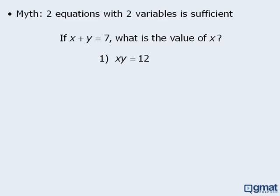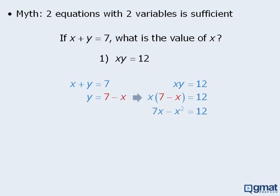Here is another example where the myth fails. In this question, we want to find the value of x. We are given one equation with two variables, and statement 1 provides a second equation with two variables. In this case the two equations are not identical, however when we combine them we still do not have enough information to solve for x and y. Taking x plus y equals 7 and solving for y gives y equals 7 minus x. Substituting into the second equation gives us an equation we can solve for x. Expanding the left-hand side and setting the quadratic equal to 0, then factoring, we can see that x equals 3 or 4. Since there are two possible values for x, statement 1 is not sufficient.